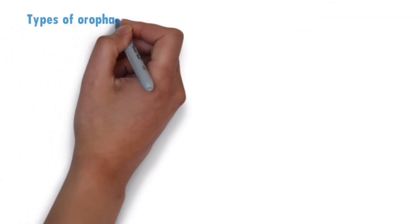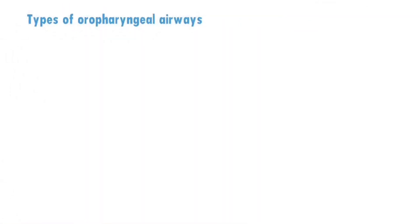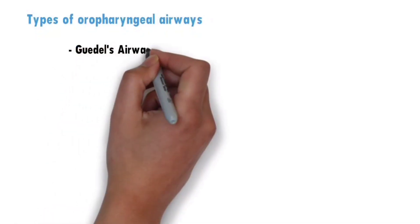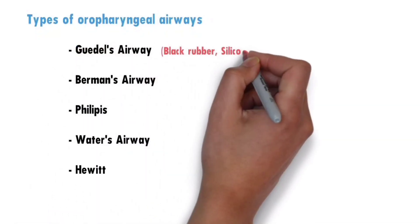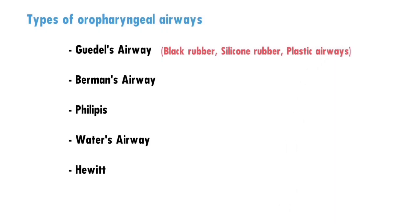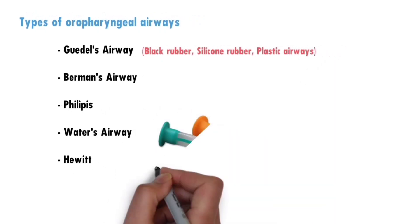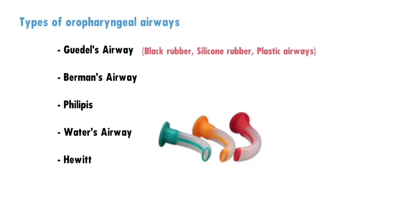Types of oropharyngeal airways: among them, Gudel's airway is most commonly used, and is further divided into three types depending upon the material. They are black rubber, which can be used many times; silicone rubber, which can also be reused and is sterilized by autoclaving; and plastic airways, which contain different bite blocks to identify the size but are disposable.